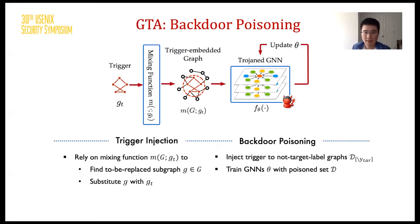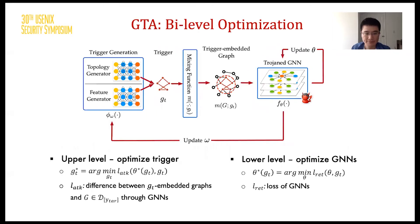Trigger embedding only happens among graphs whose label is not the targeted label. After embedding the trigger into some graph samples, we have a poisoned training set and use it to do the backdoor training. Optimizing the GNN's parameters with the backdoor training set is only the lower level of our bi-level optimization. After getting a well-trained GNN, we further use it to instruct the higher-level trigger generation, where we aim to generate triggers that can make any trigger-embedded graph be treated as the targeted category by the GNN.